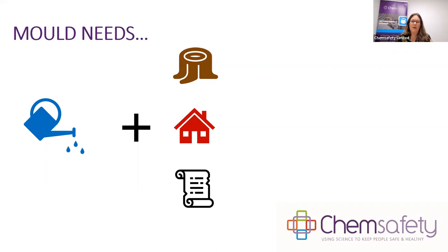When we talk about particular items that are affected by mould we discuss porosity, and there are three terms we use. The first is porous — materials that easily absorb or adsorb moisture and if organic can easily support fungal growth. This includes clothing, textiles, padded or upholstered items, leather, taxidermy, paper and some artwork.